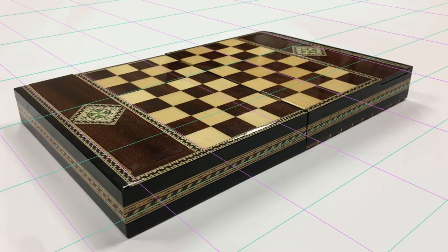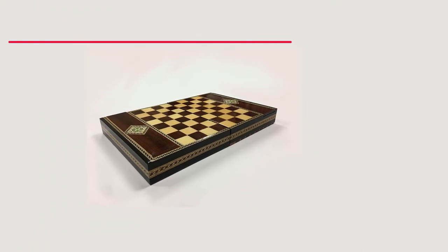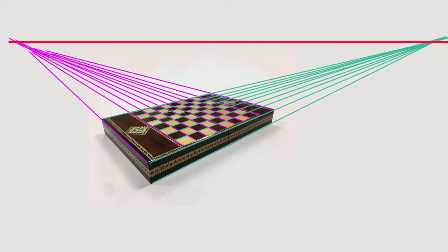When viewing the chess board from one of its corners, we see it in a two point perspective view. Now each set of parallel lines travels back in space to a separate vanishing point.